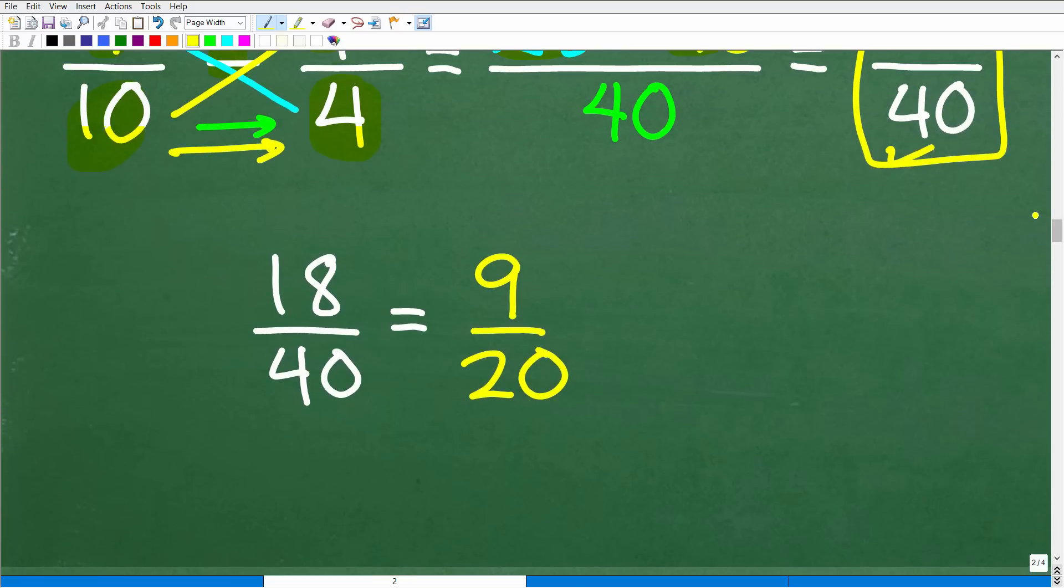What we need to do is to see if we can reduce this fraction. 2 goes into 18 nine times, and 2 goes into 40 twenty times. So there is our answer.